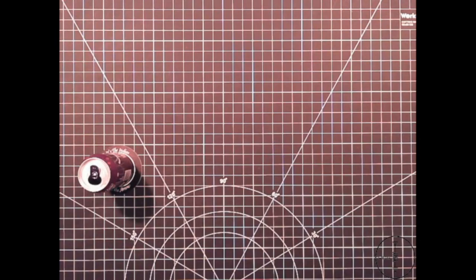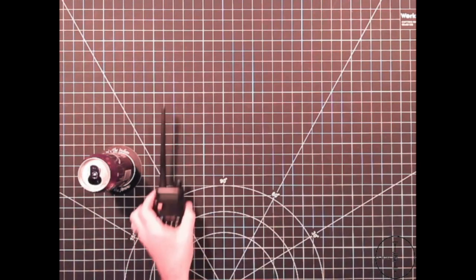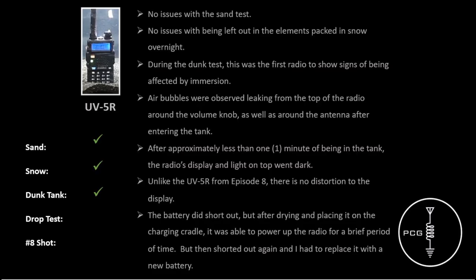After pulling the AR-152 and UV-5R from the dunk tank, I let them dry for approximately 24 hours, just like I did for the radios in Episode 8. I'll begin with the UV-5R. To recap, no issues with the sand test or being left out in the elements packed in snow overnight. During the dunk test, this was the first radio to show signs of being affected by immersion. Air bubbles were observed leaking from the top of the radio around the volume knob as well as the area around the antenna. After approximately less than a minute of being in the tank, the display and light on top went dark.